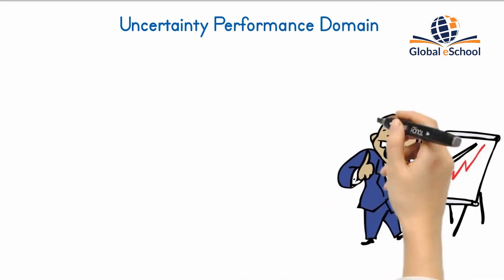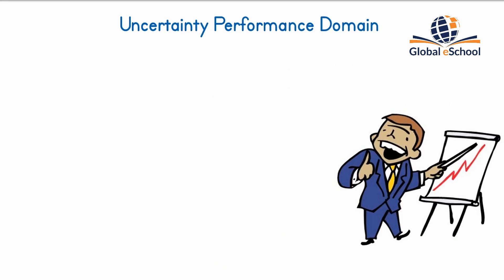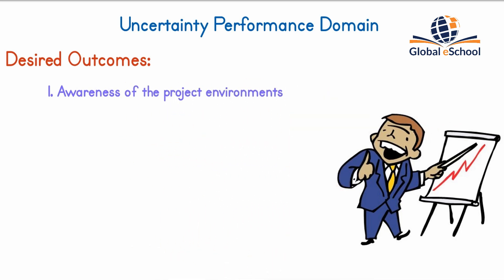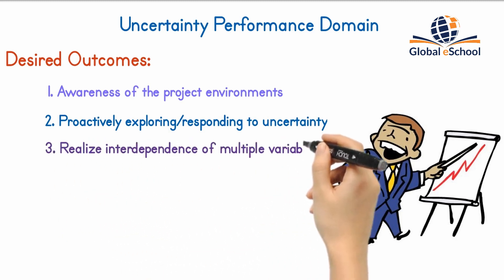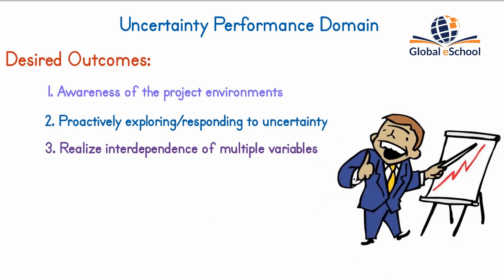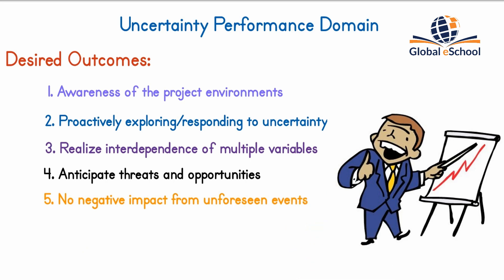The uncertainty performance domain addresses activities and functions associated with risk and uncertainty. Effective execution results in: an awareness of the environment in which projects occur, including technical, social, political, market, and economic environments; proactively exploring and responding to uncertainty; an awareness of the interdependence of multiple variables on the project; the capacity to anticipate threats and opportunities and understand the consequences of issues; project delivery with little or no negative impact from unforeseen events or conditions; and opportunities realized to improve project performance and outcomes. Cost and schedule reserves are utilized effectively to maintain alignment with project objectives.